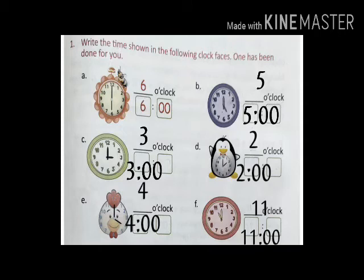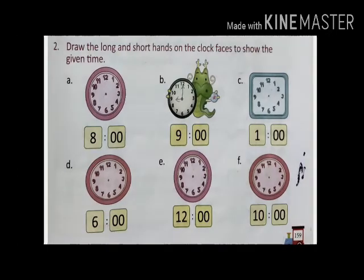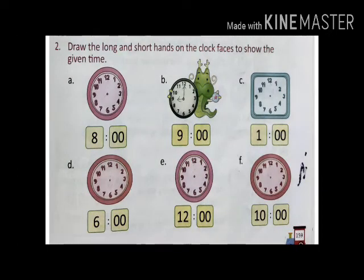The last one: the small hand is 4 and the long hand is 12, so it is 4 o'clock. Very good. This is how we are going to read the time.